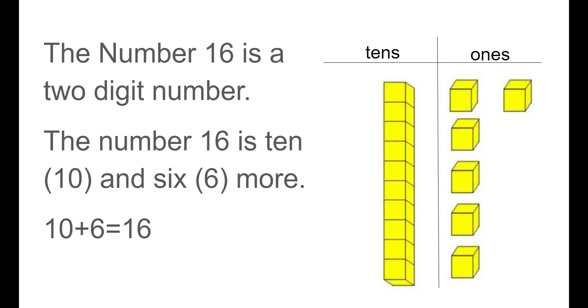The number 16 is a two-digit number. The number 16 is 10 and 6 more. We can also say 10 plus 6 equals 16. So we see over here, boys and girls, we have one group of 10, one stick of 10. And then we have six ones on their own. So 10 and 6 ones to make 16.